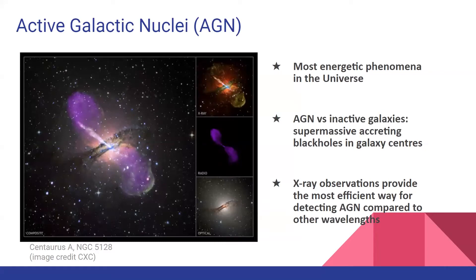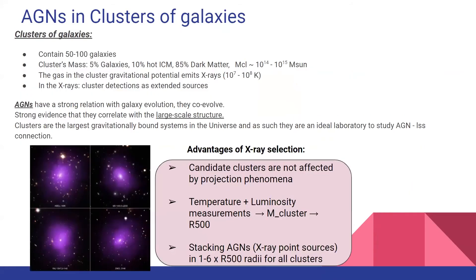In this project, we want to study AGN in clusters of galaxies, which are the largest gravitationally bound systems in the universe. Clusters of galaxies contain 50 to 1000 galaxies, and their mass consists of 5% of galaxies, 10% of hot intracluster medium, and 85% of dark matter. The values of cluster masses are 10^14 to 10^15 solar masses.